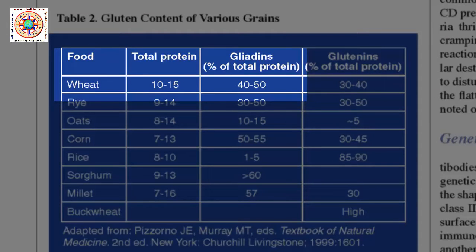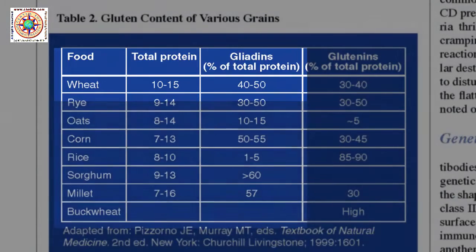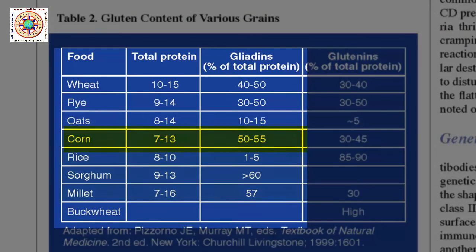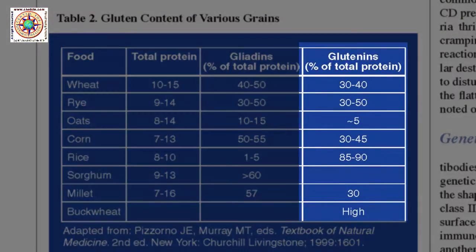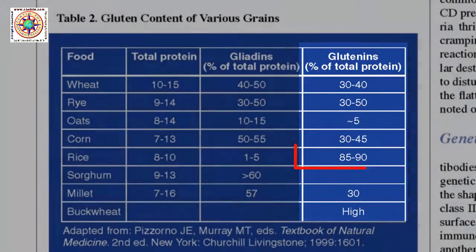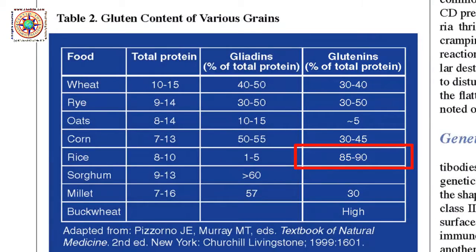However, if you look further, you can also see that corn has these gliadins, as does rye, and even oat, sorghum, and millet — though rice has only a small amount of the gliadin protein. When we go to the glutenin protein, we see that rice has one of the higher values and shares this with buckwheat, but it is also shared with corn and rye.